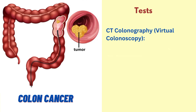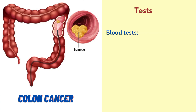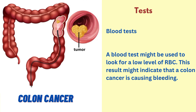The next test is CT colonography, also called virtual colonoscopy. It uses X-rays and computers to produce images of the entire colon, which are displayed on a computer screen for the doctor to analyze. Blood tests aren't used to diagnose colon cancer directly, but they can give clues about overall health, such as how well the kidneys and liver are working. A blood test might also be used to look for a low level of red blood cells, which might indicate that a colon cancer is causing bleeding.